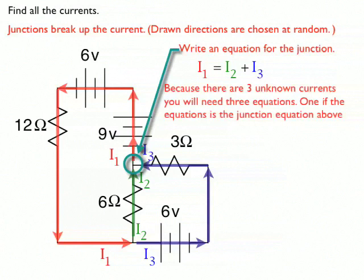You can also note that the junction at the bottom is just the opposite of the junction at the top. I've got I1 going in and I've got 2 and 3 both going out. So it sets up as the same equation. So you don't want to use that junction as your second equation to find I1, I2, and I3.